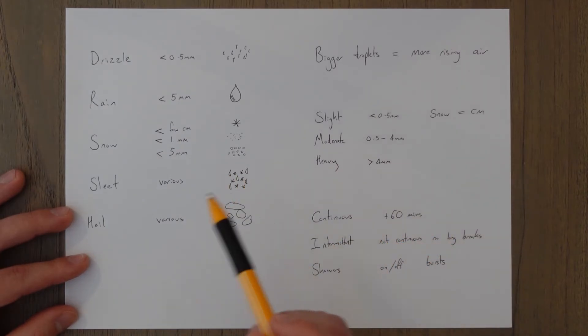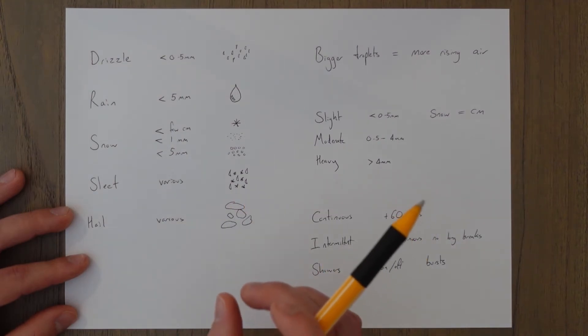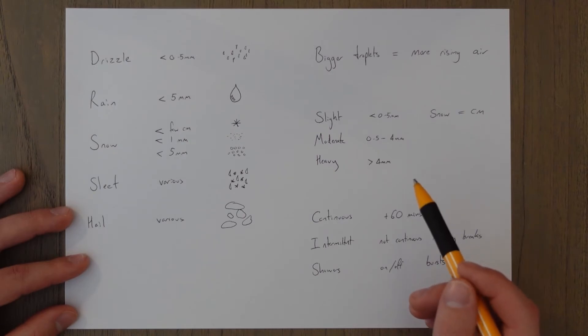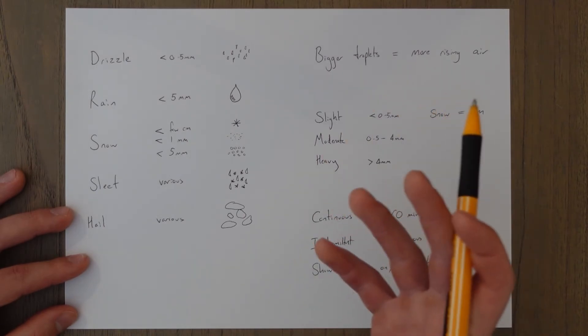You also get hail which again can be various sizes. Tiny little particles all the way up to big tennis ball size things that you get in some places with extreme weather.